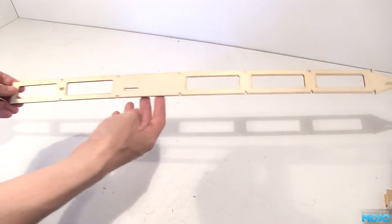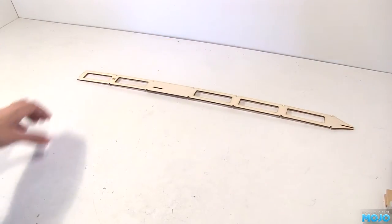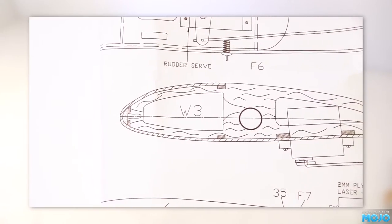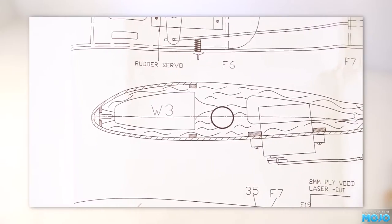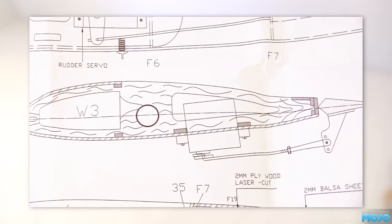The first step is to pop the ribs onto the spar. Be careful as it's entirely possible to build two left wings. So compare the two halves before you go anywhere near them with glue. The ribs go over the spar, then rotate into the slots. Quite a nice design that will make it nice and easy to build a good straight wing.